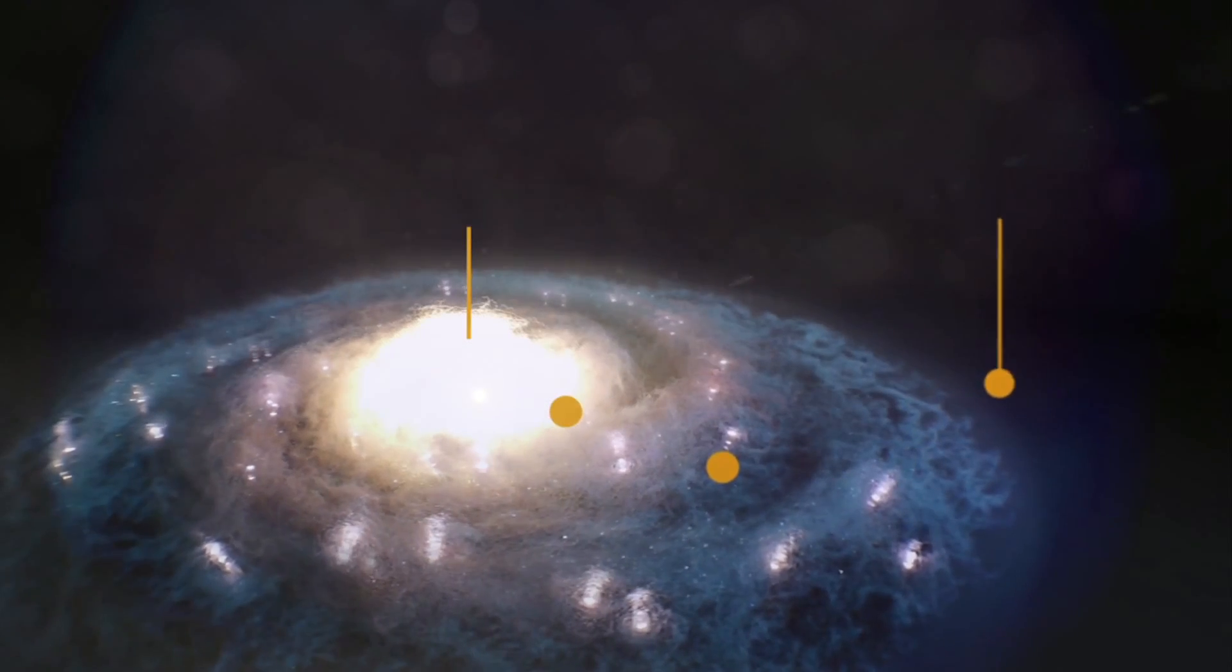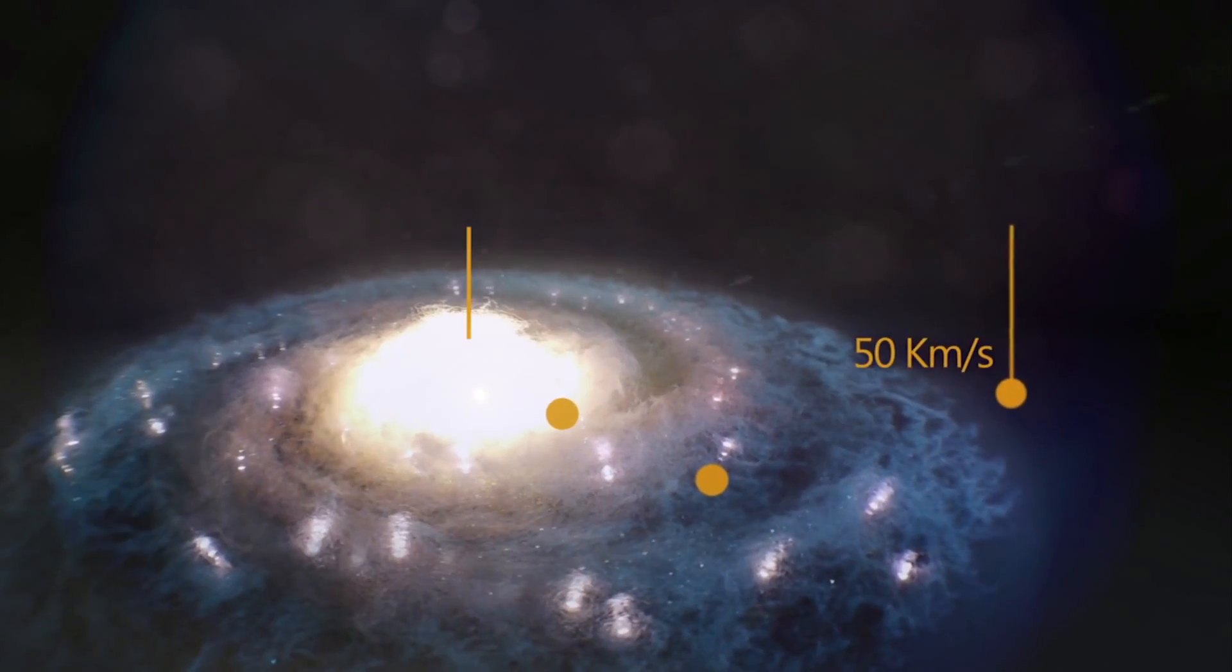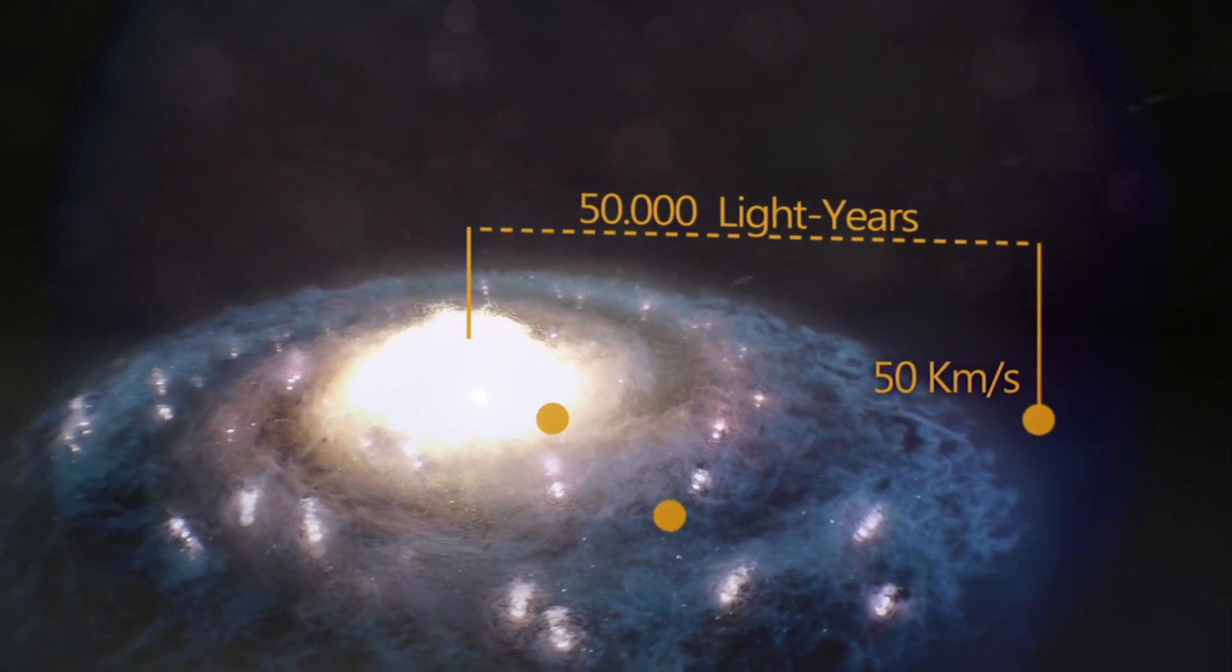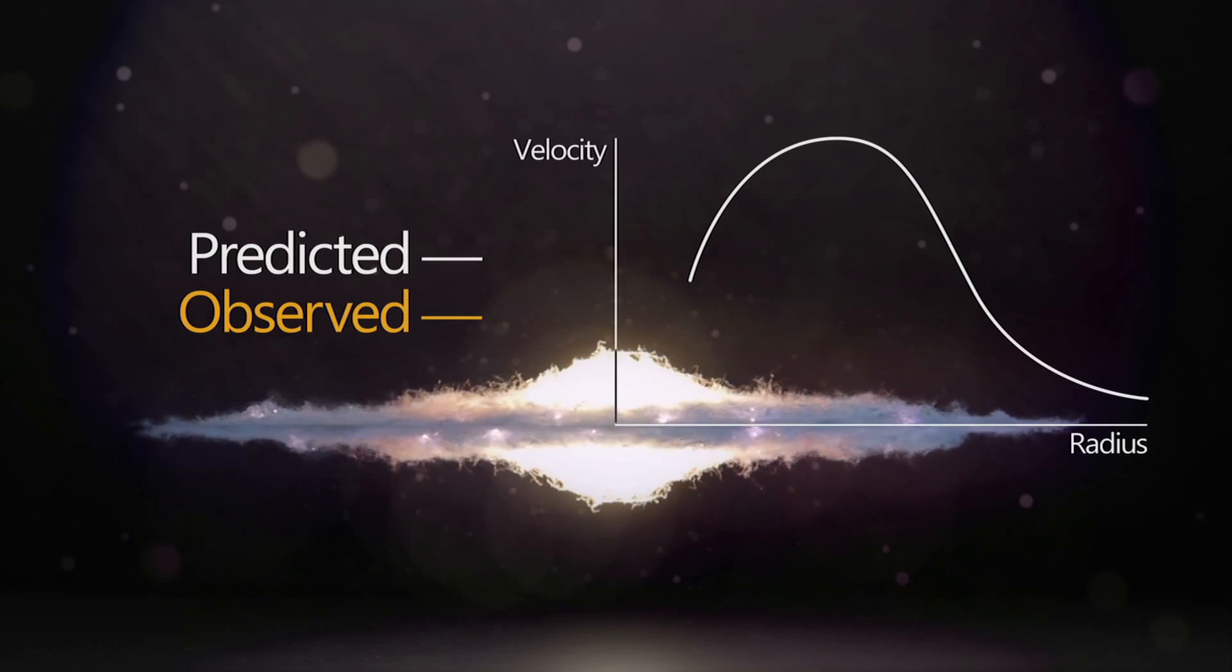As we get really far away, the stars are predicted to move slowly again. Their great distance reduces gravity to a gentle tug so they move leisurely in their orbits. Knowing this, scientists looked at the galaxies and measured how fast stars were moving.